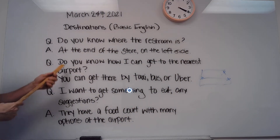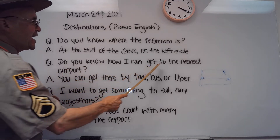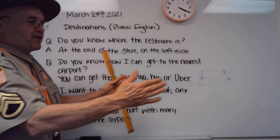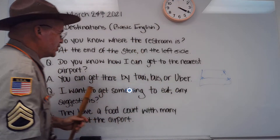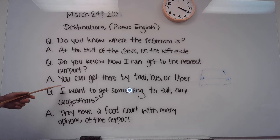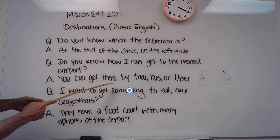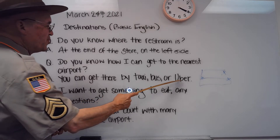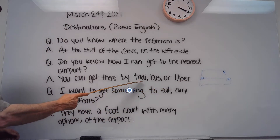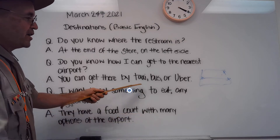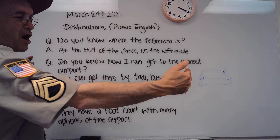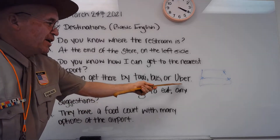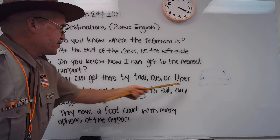Do you know how I can get to the nearest airport? The nearest means the one closest to you. You can get there by taxi, bus, or Uber. Taxi — you pay the guy in the car. The bus is with a lot of people. And Uber is like the taxi — these two are similar.